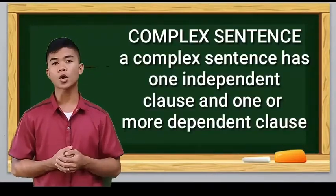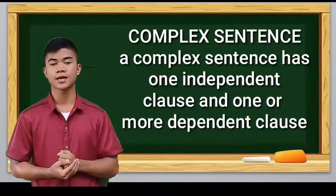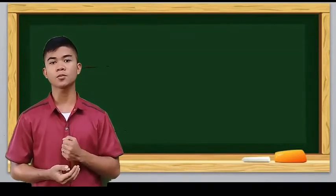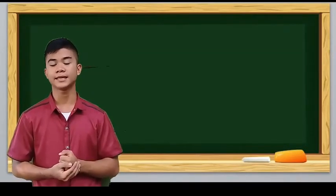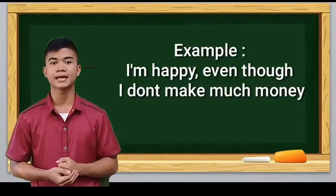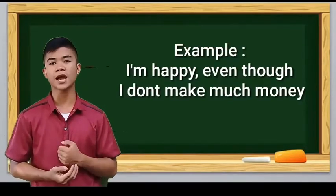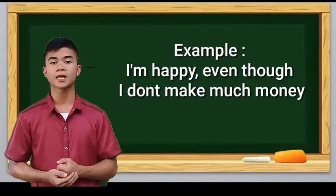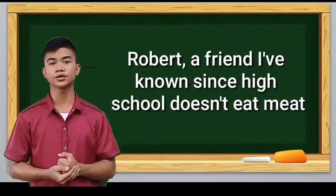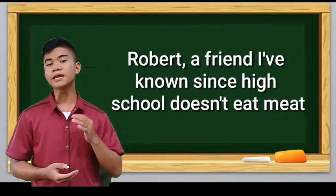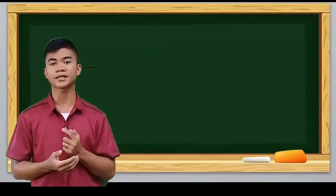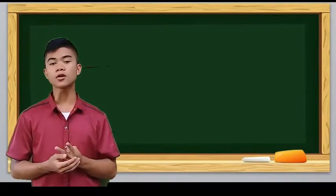The third form of sentence is a complex sentence. Complex sentence has one independent clause and one or more dependent clauses. A dependent clause cannot be a complete sentence by itself. Example of the complex sentence: I'm happy even though I don't make much money. I'm happy even though I don't make much money. So in the sentence we have one independent clause and one or more dependent clauses.